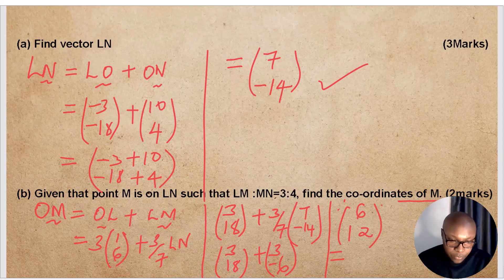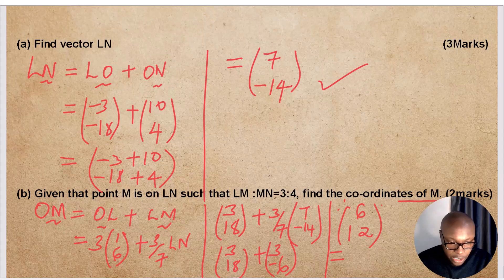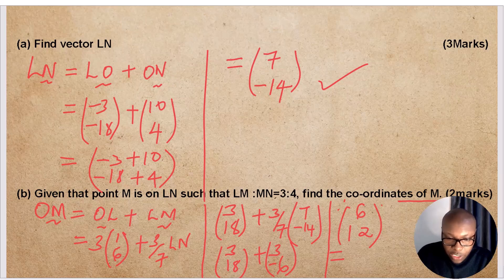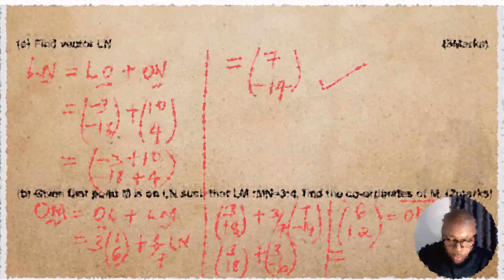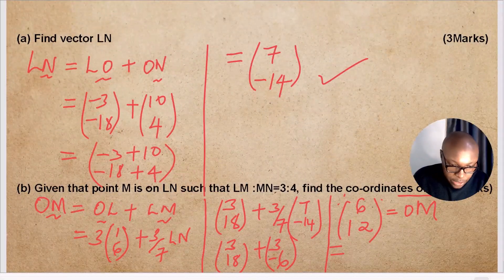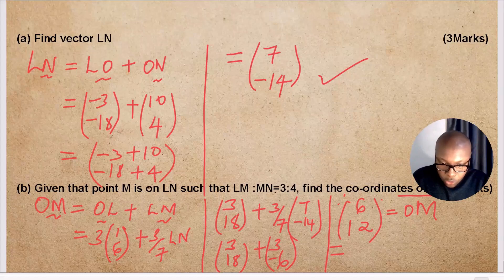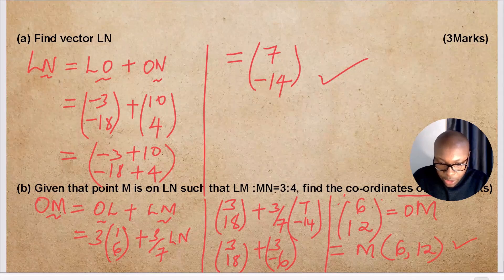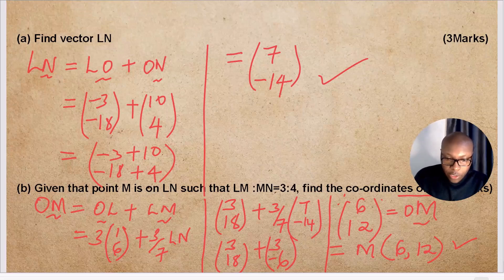So vector OM equals (6, 12). Since OM is the position vector of M, the coordinates of M are therefore (6, 12).